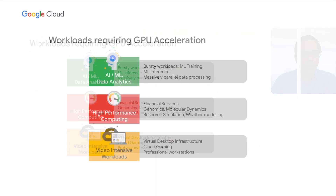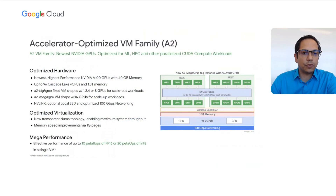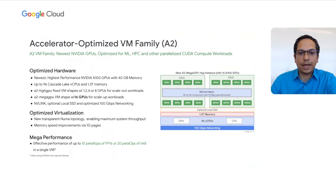There are several workloads that can take advantage of hardware GPU acceleration. Typically these are data-intensive workloads — AI inference or training workloads that can be bursty and deal with large amounts of data, data analytics where massive data can be processed in parallel, and high-performance computing and video-intensive workloads. Our A2 VM family includes the latest NVIDIA A100 GPUs with up to 40 gigabytes of memory, supporting up to 96 vCPUs with 1.3 terabytes of memory. These machines support up to 16 NVIDIA A100 GPUs, delivering up to 10 petaflops of FP16 or 20 petaflops of INT8 performance in a single VM.